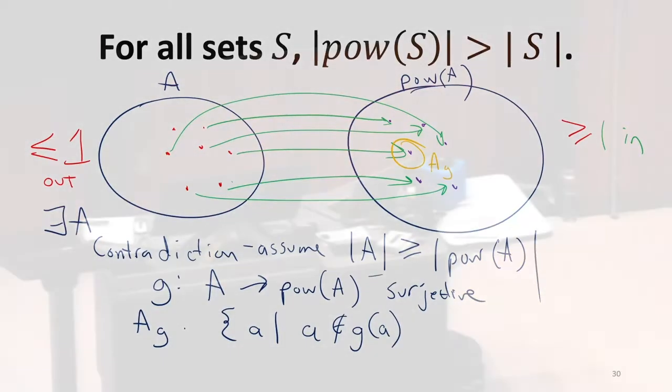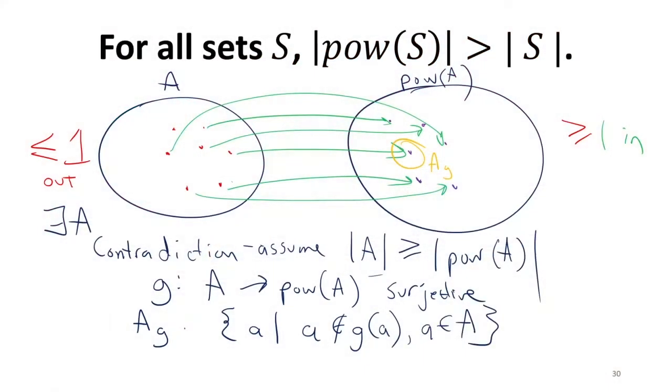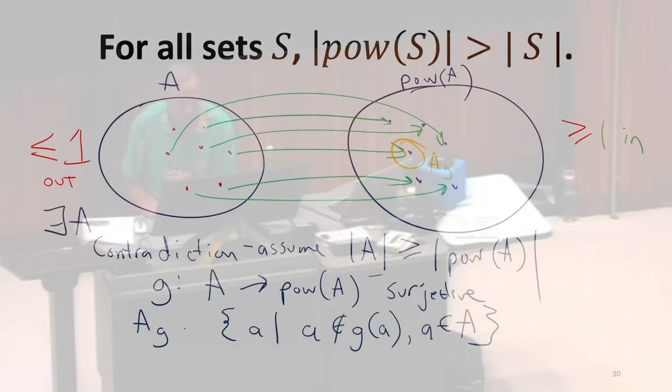So the last line, now we're going to define a set. So this is going to be the set of all elements of A where when we map them to the power set, right? So remember the elements of the power set are sets that are subsets of elements of A. So GA here, AG is some point here, which we're defining now as the set of all elements where A is not an element of the set it maps to.